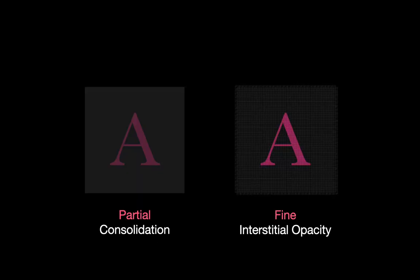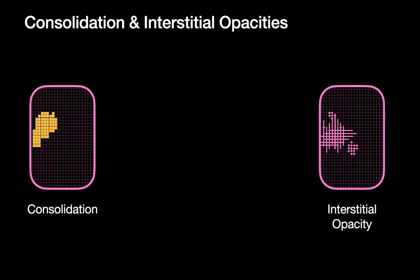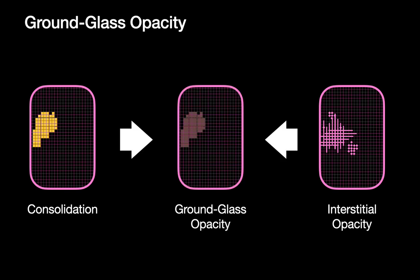When consolidation is incomplete — meaning the air spaces are not completely filled with fluid — or when the interstitial opacities are finer than the spatial resolution of the pixels on a CT image, what you have is like peering through a tinted window, as one of my colleagues likes to describe it. That's what ground glass opacity is: essentially mild consolidation or very fine interstitial opacity.